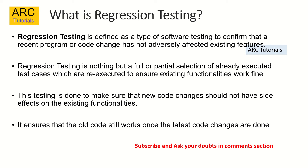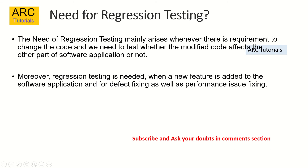Imagine that you already have an application and you are adding some new functionality to it — regression testing will help us test the existing functionality as well as the new changes. Regression testing is a full or partial selection of already executed test cases which are re-executed to ensure existing functionalities work fine. This testing is done to make sure that new code changes should not have any side effects on the existing functionalities, and that the old code still works once the latest code changes are merged in.